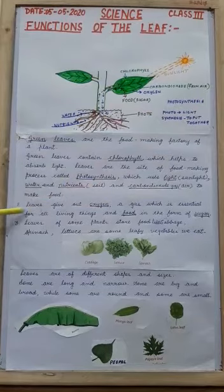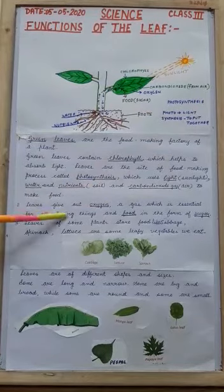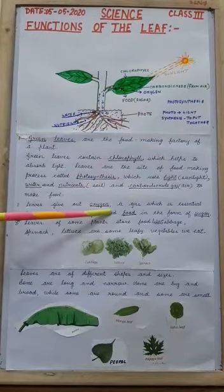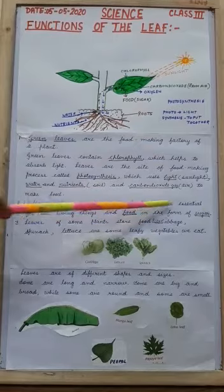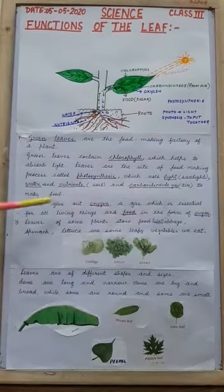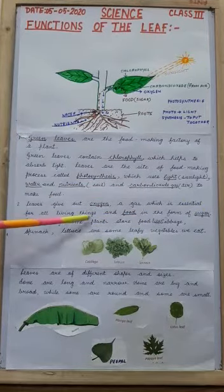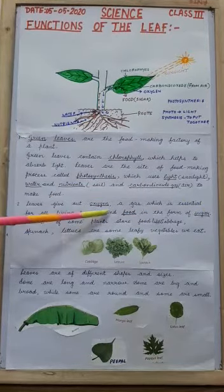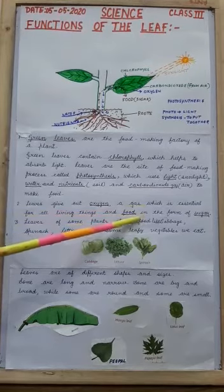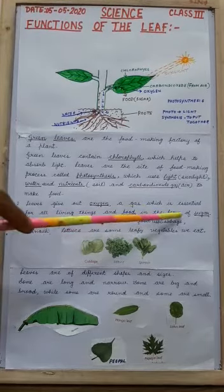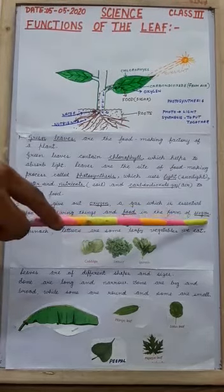Second, leaves give out oxygen, a gas which is essential for living things, and food in the form of sugar.